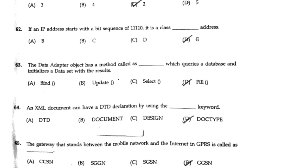An XML document can have the DTD declaration by using the DOCTYPE keyword.